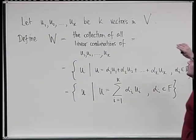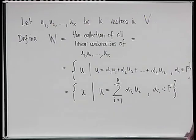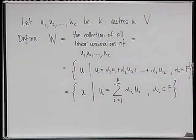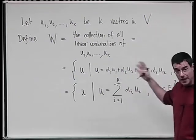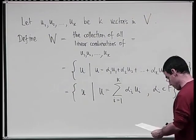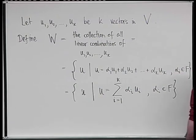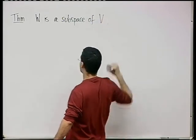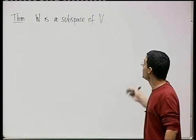W is all possible linear combinations of K given specific vectors. Hinted by the fact that I called it W, I want to prove that this W is not just a set of elements — in fact it's a subspace. So this is a theorem: W is a subspace of V.